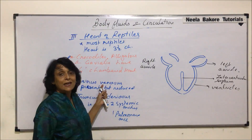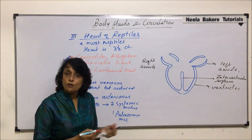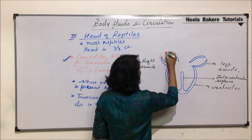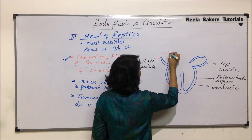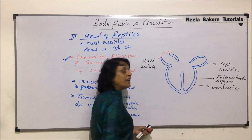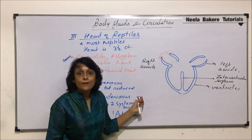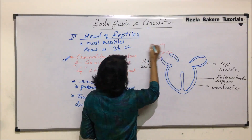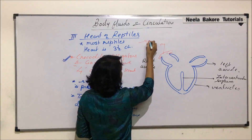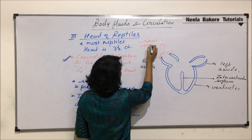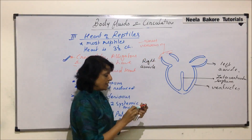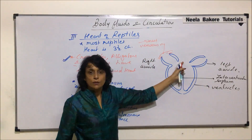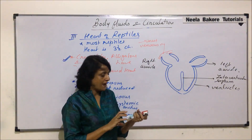The sinus venosus is the accessory compartment — it is here but reduced, as compared to what we see in amphibians. It is still present. Let us now look at the circulation, and then we will come to the truncus arteriosus which has divided.